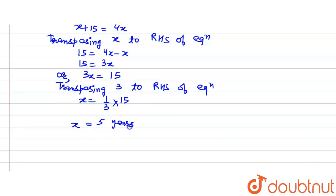And we know that x was Ravi's present age. So x is equal to 5 years. Hence, Ravi's present age is 5 years.